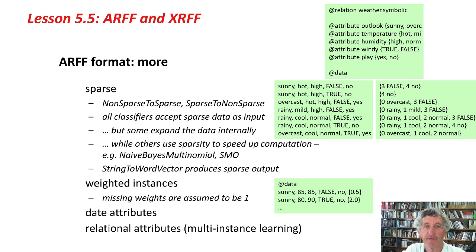There are a couple of other features. Weighted instances — we've talked about instances being weighted internally to Weka. You can specify weighted instances in ARF files using curly brackets at the end of the instance. With the weather data, for example, the first instance has a weight of 0.5 and the second instance has a weight of 2. If weights are missing, they're assumed to be 1. You can specify weights explicitly in your ARF file.